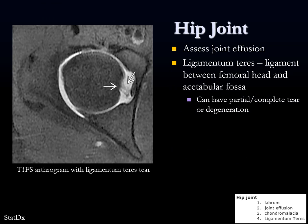The ligamentum teres is the ligament between the femoral head and the acetabular fossa. It can be torn or degenerated - a pretty uncommon finding, but it can be symptomatic. Look at the ligamentum teres to make sure it's normal - typically it would just appear as a dark black structure.